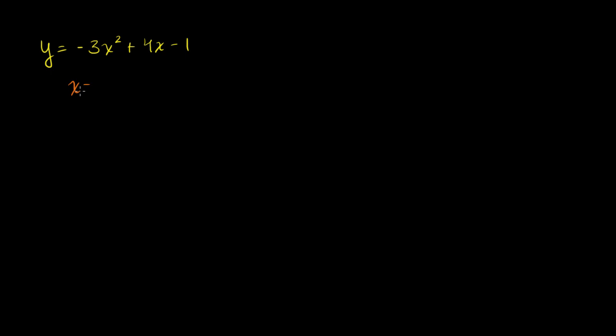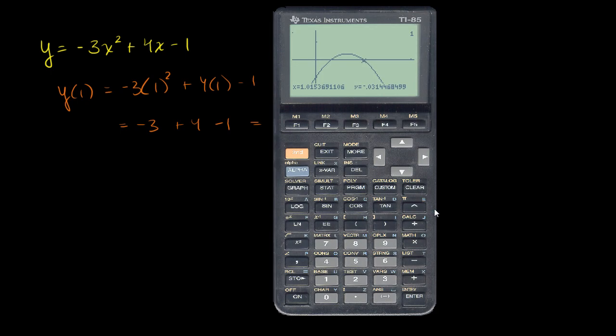Let's try it out. If x equals 1, let me write it this way. y of 1, if we write y as a function of 1, this is going to be equal to negative 3 times 1 squared plus 4 times 1 minus 1. So this equals negative 3 plus 4 minus 1, which is indeed 0. So the point x equals 1, y equals 0 is definitely on the graph, and this is one of our x-intercepts. Let's see if we can figure out the other one using our calculator.